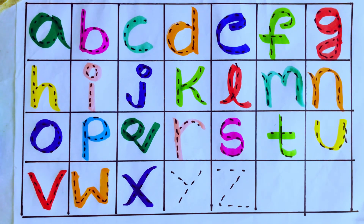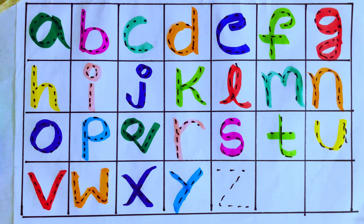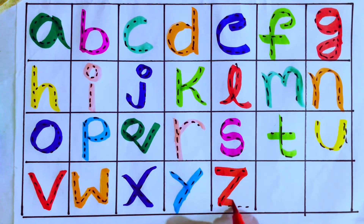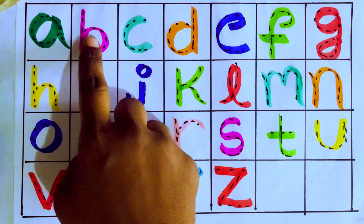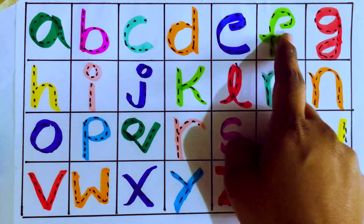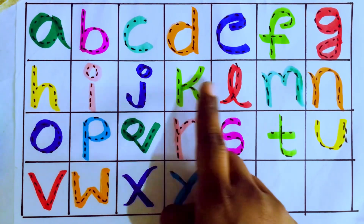W after X, which letter, kids? X! X for X-ray. Sky blue color — X after Y. Y for yellow. Red color — Z. Z for zebra. Now let's say the alphabet: A, B, C, D, E, F, G, H, I, J, K, L, M, N, O, P, Q, R, S, T, U, V, W, X, Y, Z!